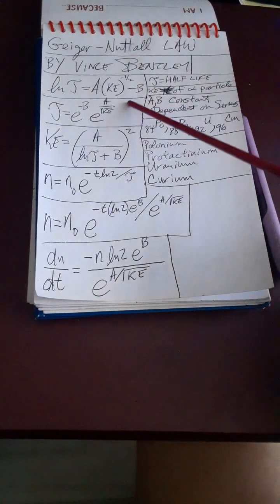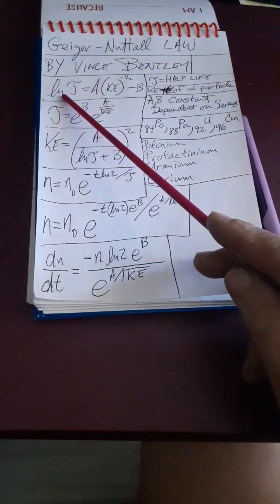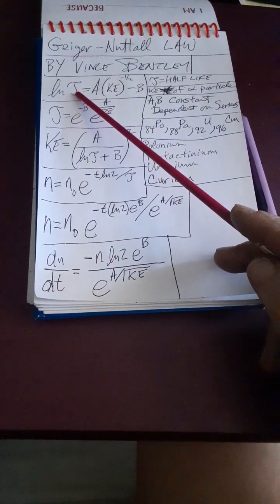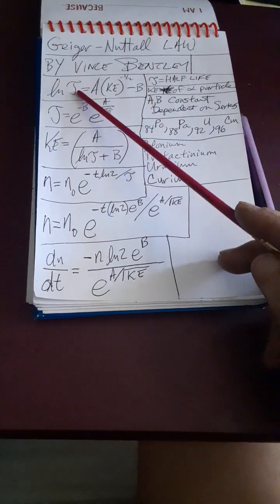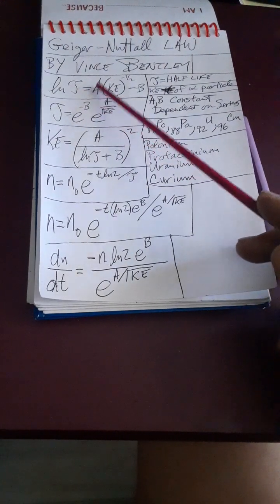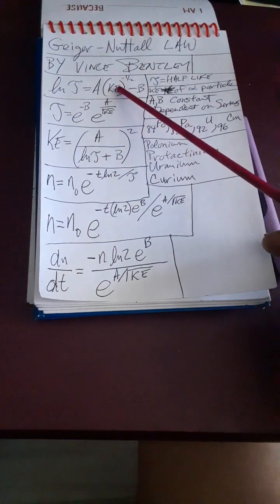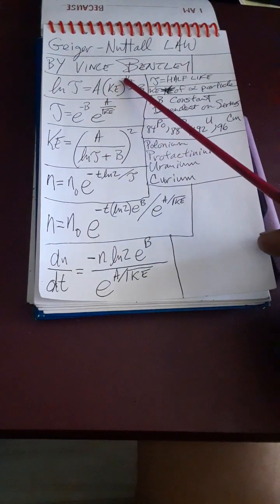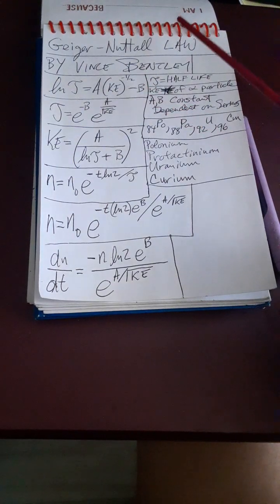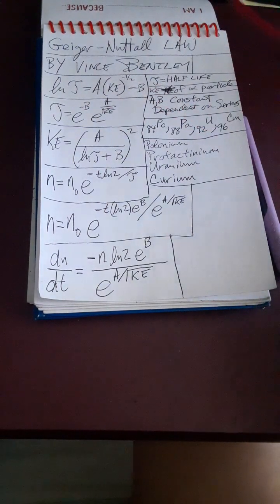So let's just state the law immediately, and that's that the natural log of the half-life of a radioactive series which emits alpha particles is equal to some constant times the kinetic energy of the alpha particle to the negative one-half power minus another arbitrary constant that's dependent on the radioactive series.